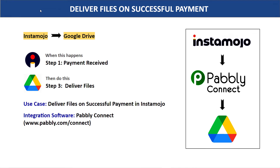Hello everyone, today I am going to show you how you can automatically deliver files to your customers on successful payments in Instamojo. In place of Instamojo, you can use any payment gateway software like Razorpay, PayPal, etc. I am going to do this by integrating two software: Instamojo and Google Drive. Both do not have any direct integration, so I am going to use the integration software Pably Connect. With Pably Connect, we can transfer data from Instamojo to Google Drive and the best part is we do not require any knowledge of coding.